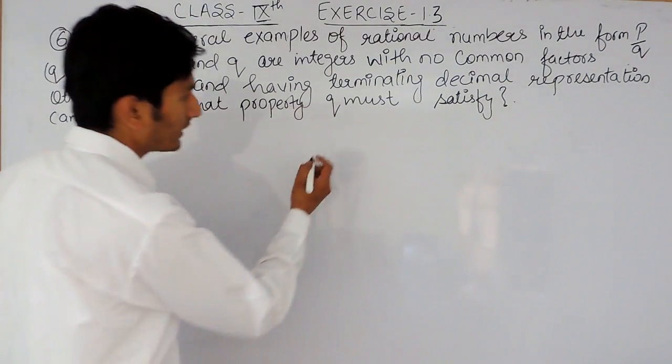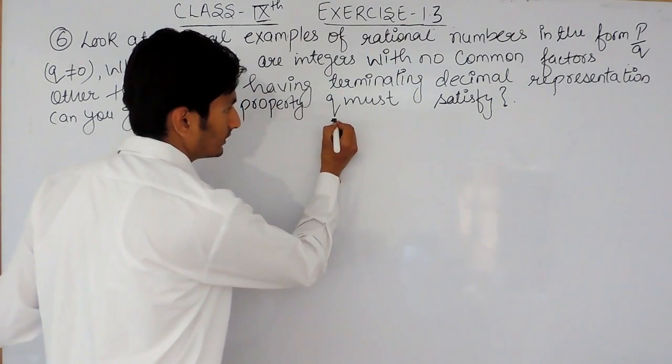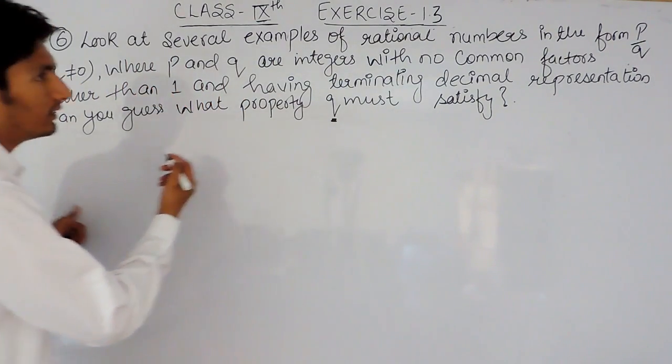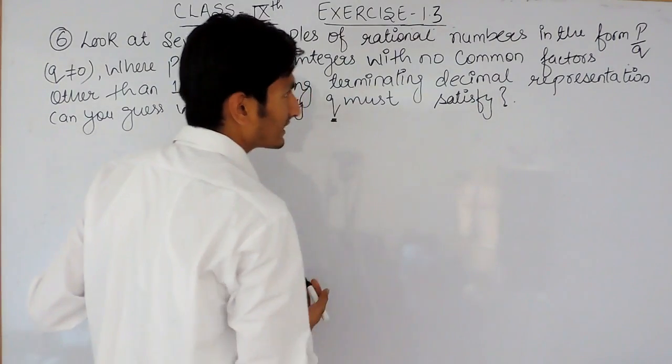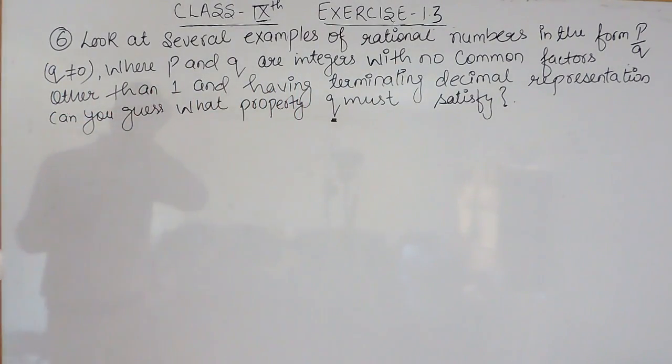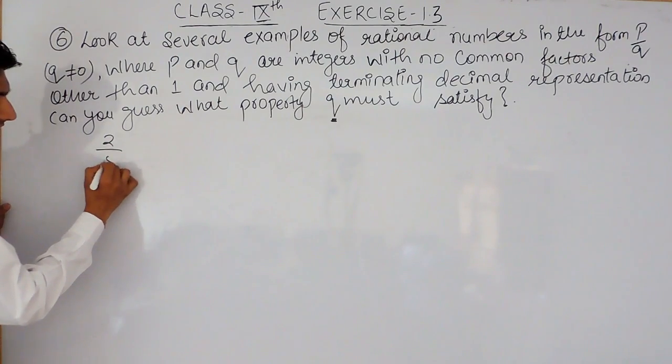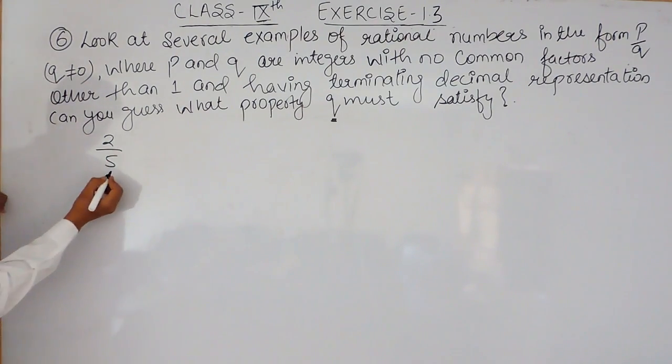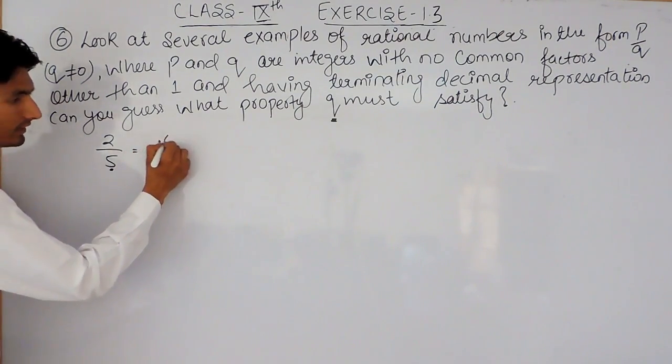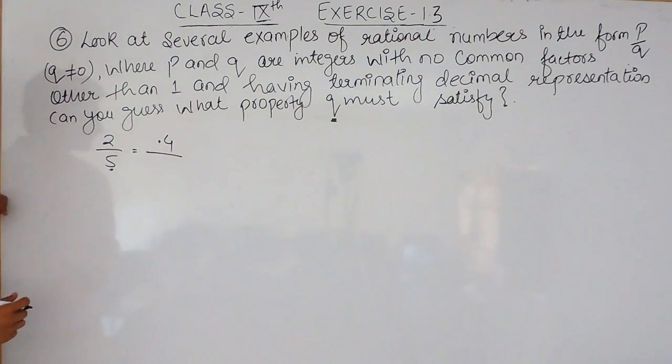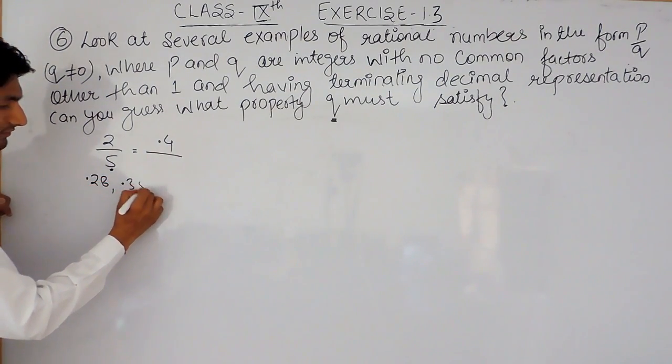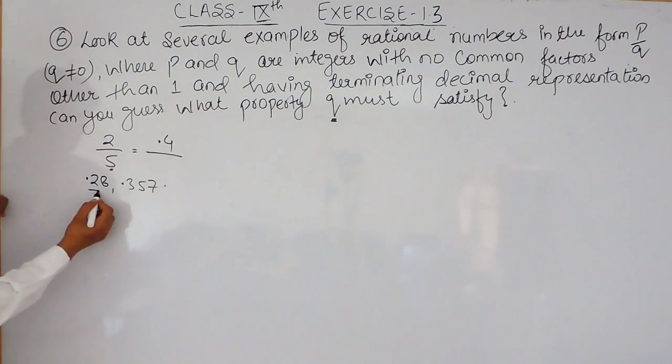As I have already discussed in the first question, what are terminating decimal expansions? If I am writing this as 2 upon 5, obviously there is 5 in the denominator, so this will terminate and this will be 0.4. Same as if I am writing this as 0.28 or 0.357, obviously these are terminating.